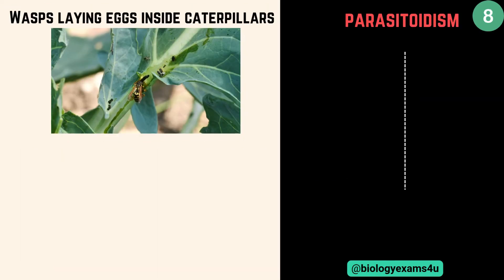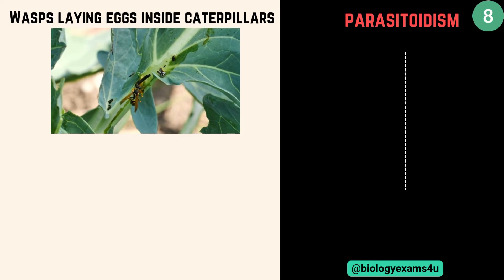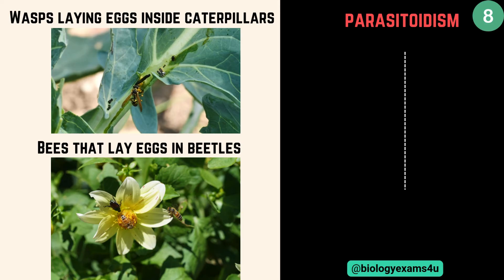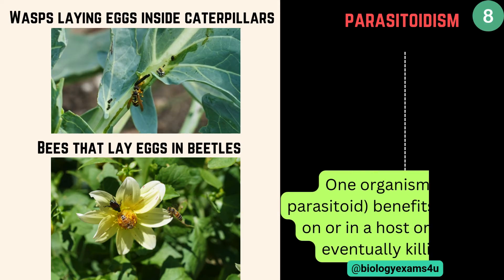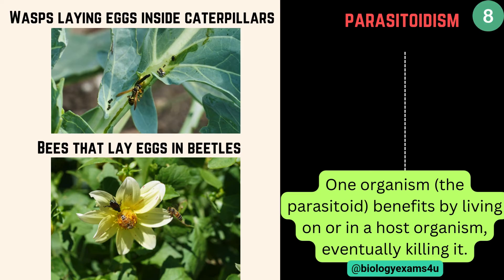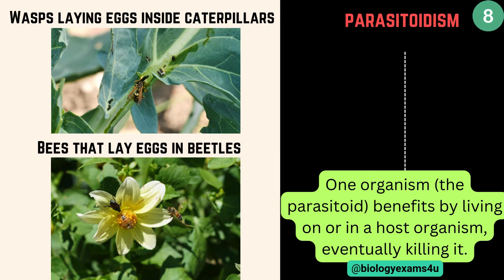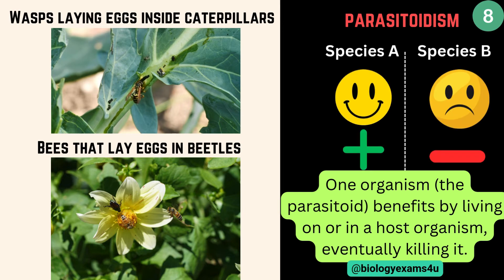The next interaction is called parasitoidism. Wasps laying eggs inside caterpillars — the larvae consume the caterpillar from within. Second example is bees that lay eggs in beetles, where larvae consume the beetles as they develop. Here one organism, the parasitoid — these wasps and bees — benefits by living on or inside the host organism, eventually killing it. So species A is benefited, whereas species B is negatively affected.